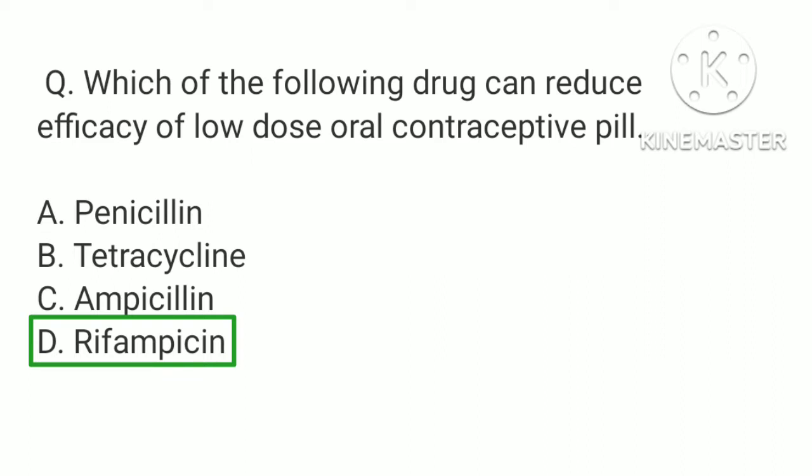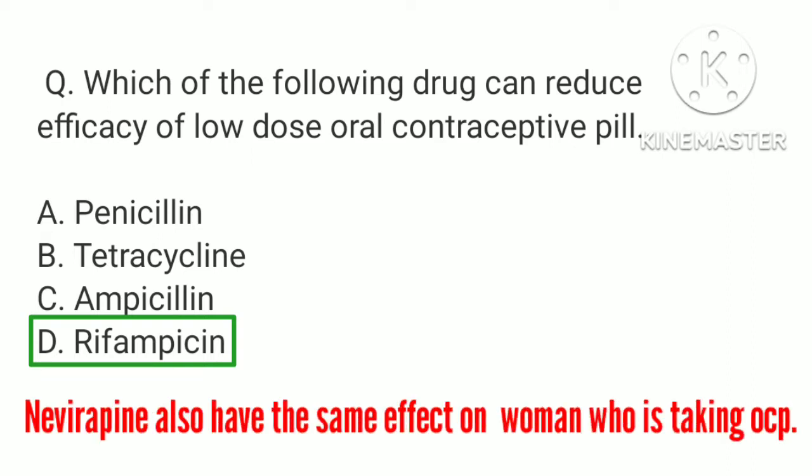The antibiotic rifampicin decreases estrogen concentration in women who are taking oral contraceptive pills, so it lowers the effectiveness of the pill in preventing pregnancy. Nevirapine also has the same effect on women taking oral contraceptive pills.